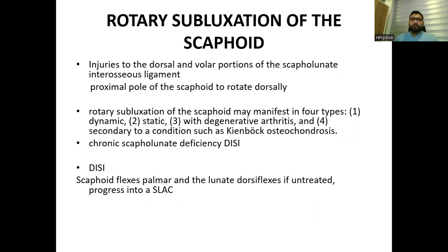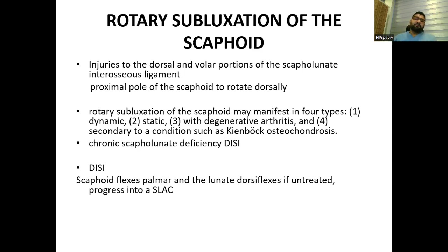Rotatory subluxation of the scaphoid is also an important topic. Injuries to the dorsal and volar portions of the scapholunate interosseous ligament cause the proximal pole of the scaphoid to rotate dorsally. This may manifest in four types: dynamic, static, with degenerative arthritis, and secondary to Kienböck's disease. Chronic scapholunate deficiency leads to DISI — the scaphoid flexes palmarly and the lunate dorsiflexes if untreated — and will progress into scapholunate advanced collapse (SLAC).